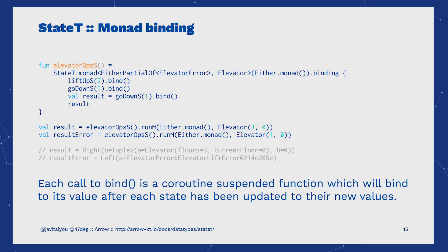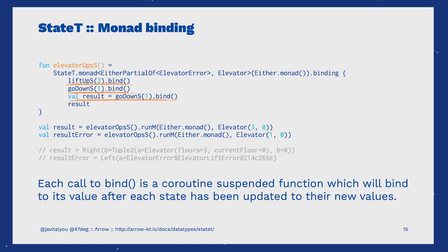Being a monad instance, it means we can combine operations with our StateT instances in a more imperative-looking way with monad bindings. Each call to bind is a coroutine suspended function, which will bind to its value after each state has been updated to their new values.